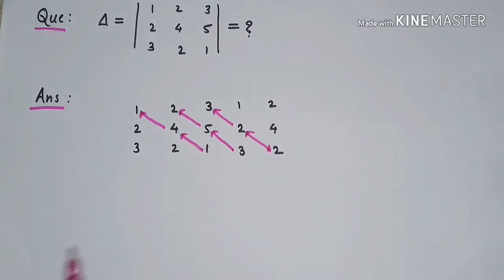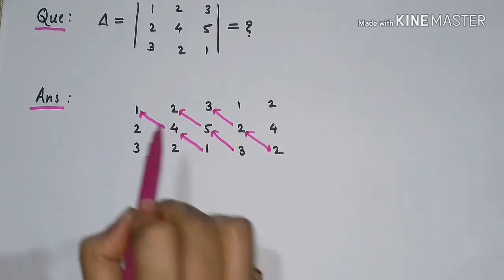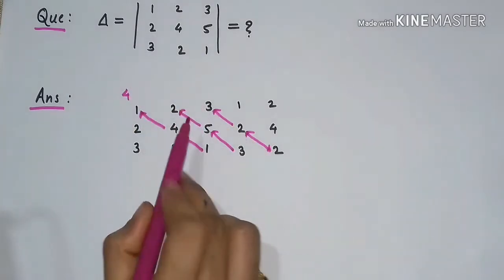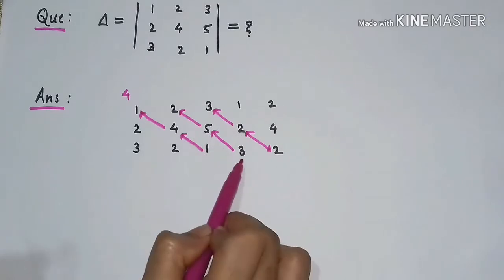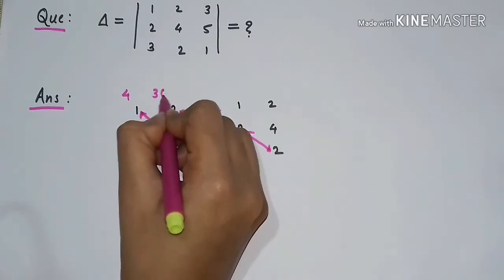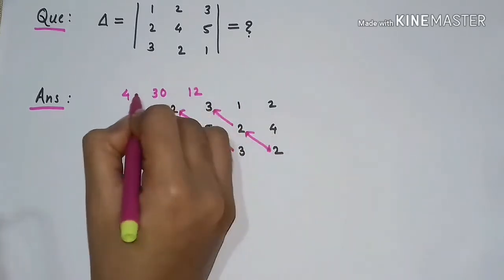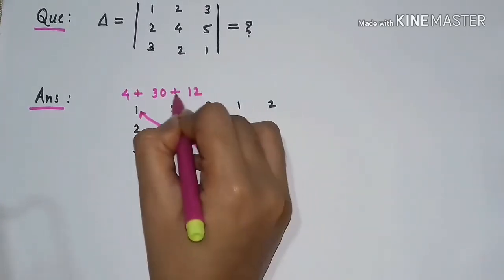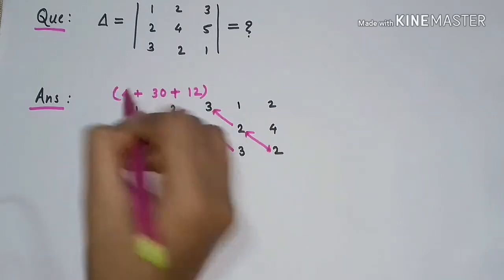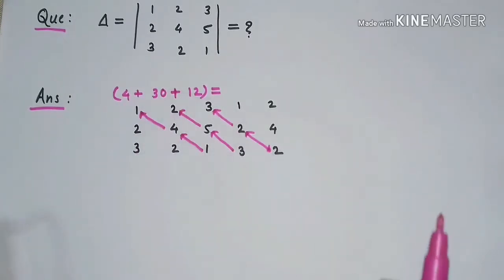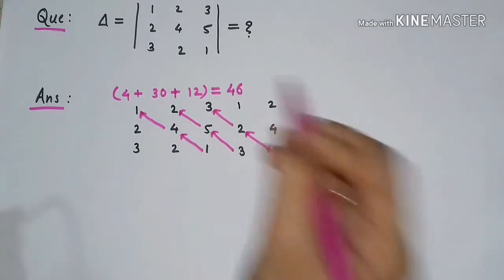Now we have to multiply along the diagonals. That is 1 times 4 times 1 is 4, 2 times 5 is 10, times 3 is 30, 3 times 2 is 6, times 2 is 12. Then add these multiplications. The sum is 46.